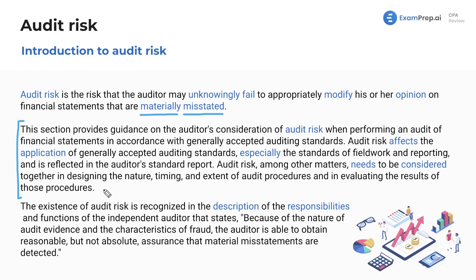Audit risk needs to be considered when designing the nature, the timing, and the extent of audit procedures, and when evaluating the results — super important. The existence of audit risk is recognized in the description of the responsibilities and functions of the auditor, which states that because of the nature of audit evidence and the characteristics of fraud, the auditor is able to obtain reasonable but not absolute assurance that material misstatements are detected. We have our reasonable but not absolute assurance covering our liability.